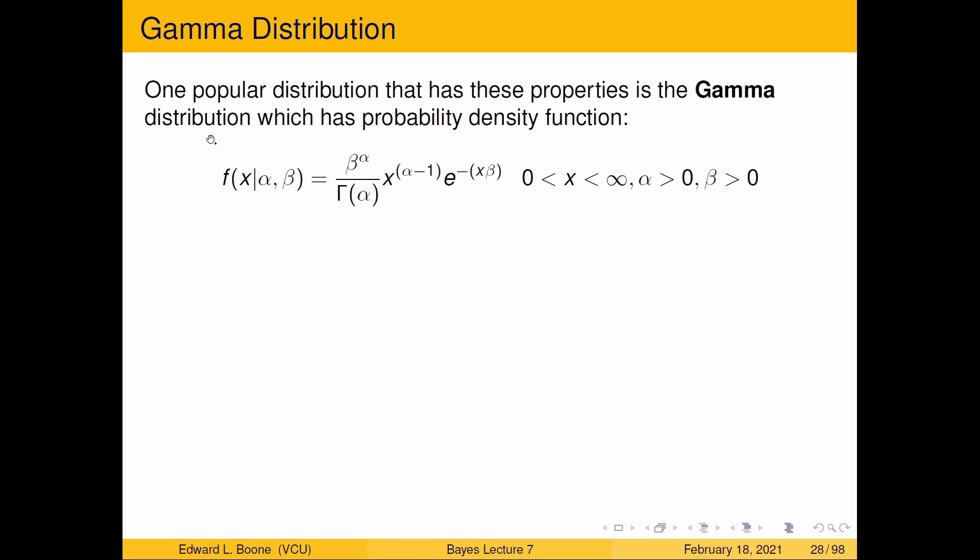Okay, so what distribution might work? Well, one popular distribution that has these properties is the gamma distribution, which has the probability density function that's given by this here, and it has two parameters, alpha and beta. And again, it's kind of like, wait a minute, didn't the beta distribution have two parameters, alpha and beta? Yes, it did. But these are the ones we're putting in this one. They're different parameters, and they work differently. But if you stare at this, you'll see that there is a gamma function down in here, which is related to the gamma distribution. X can only go from zero to infinity, alpha has to be greater than zero, and beta has to be greater than zero.